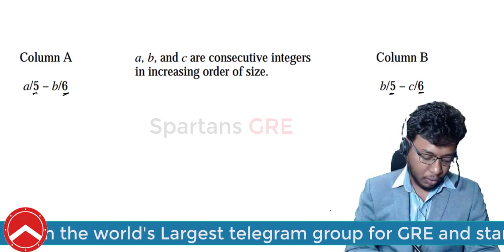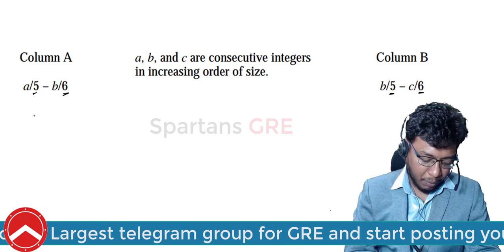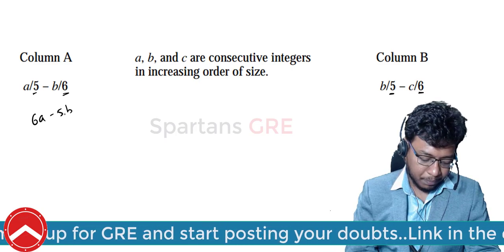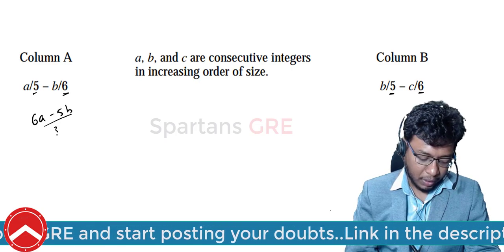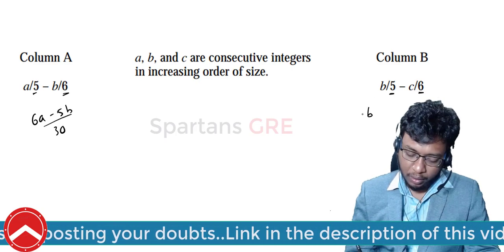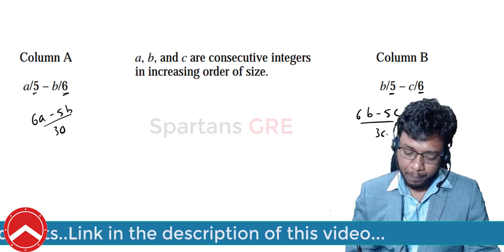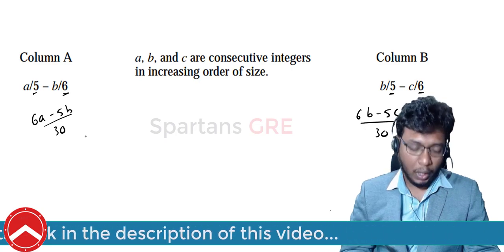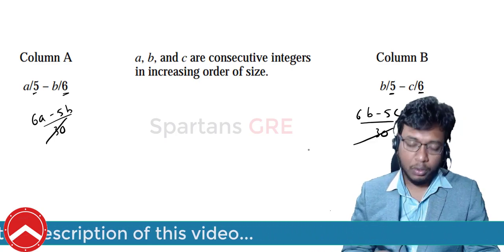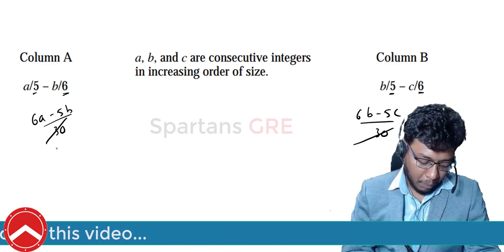I can eliminate them by taking the LCM. If I take the LCM, it will give (6A − 5B) / 30 for quantity A and (6B − 5C) / 30 for quantity B. Now I can remove the 30 from both sides.